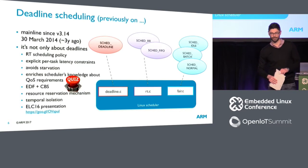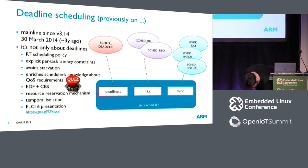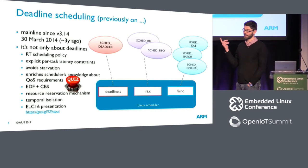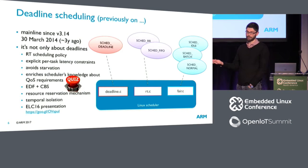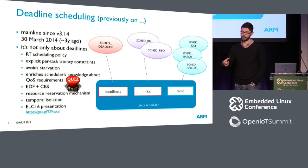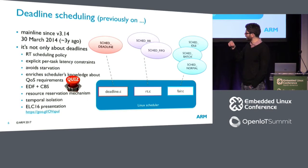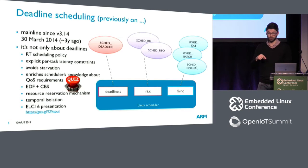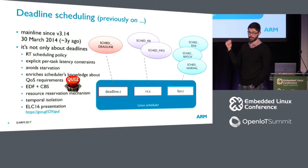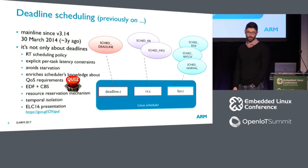CBS stands for Constant Bandwidth Server. EDF is basically pretty simple — you schedule the task with the earliest deadline. It's a priority-based algorithm based on deadlines. The nice thing about CBS is it's another algorithm that picks the dynamic deadlines of different tasks, and it's that algorithm that makes temporal isolation and avoiding starvation possible.